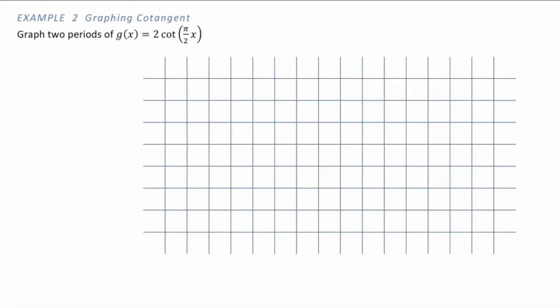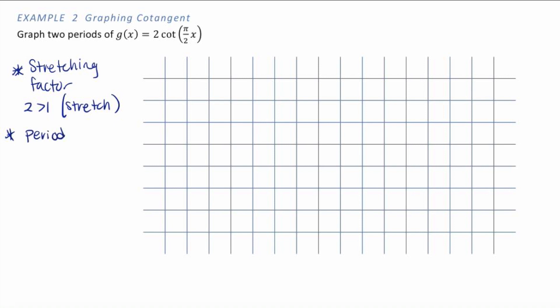Graph two periods of g(x) = 2·cot(πx). Let's identify key values. First, our stretching factor is 2, which is greater than 1, so this is a stretch. Our period is π/b — in this case b equals π, so the period is π/π, which is just 2. Notice there are no π's in this value, so we are still in radians, but the horizontal axis should have no π symbols.